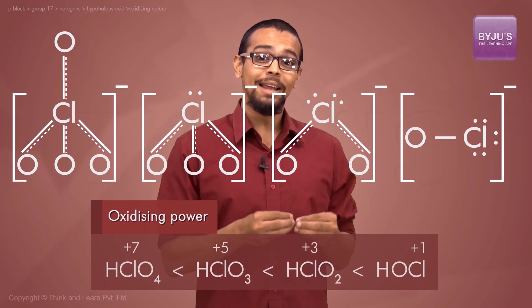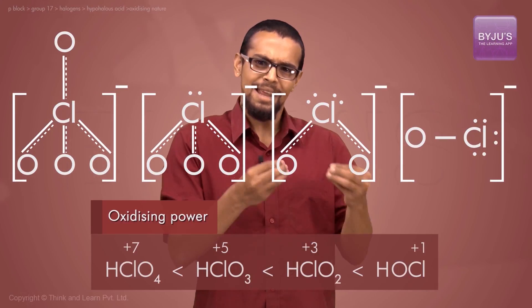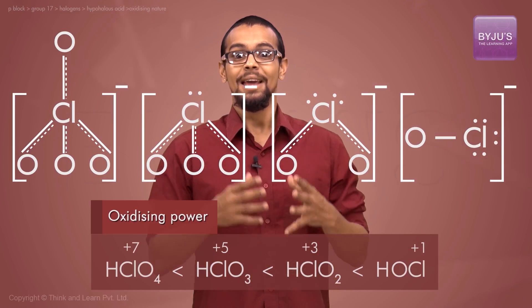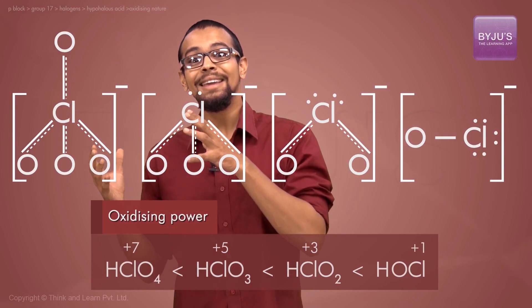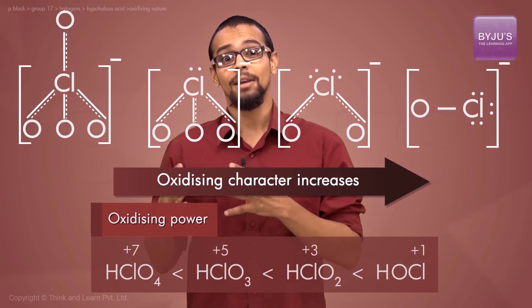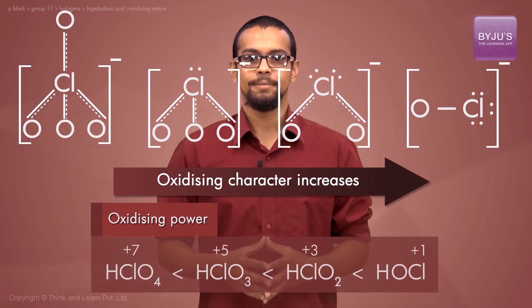And the hypohalite ion in which the oxidation number of the halogen is lesser is less stable, implying the oxygen can be removed more easily. Therefore, the oxidizing character increases as you move from a higher oxidation state oxyacid towards a lower oxidation state oxyacid.